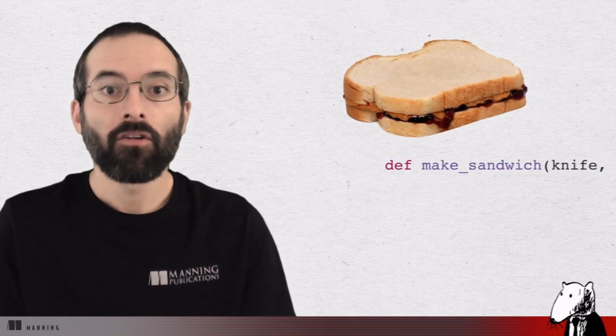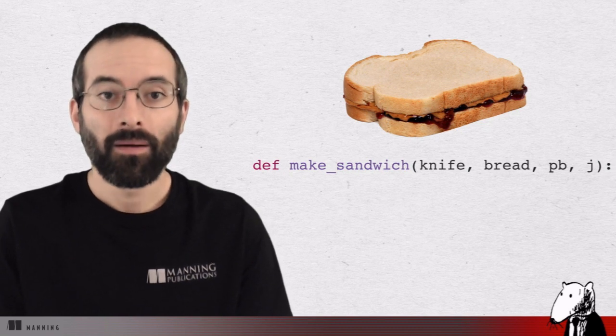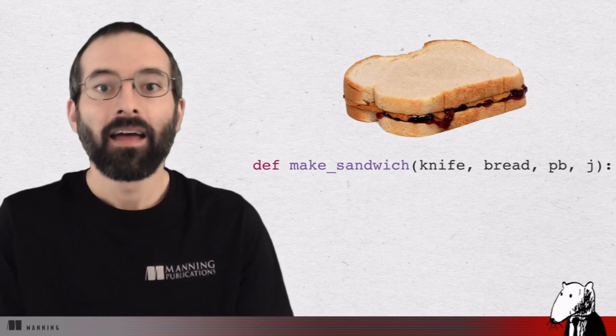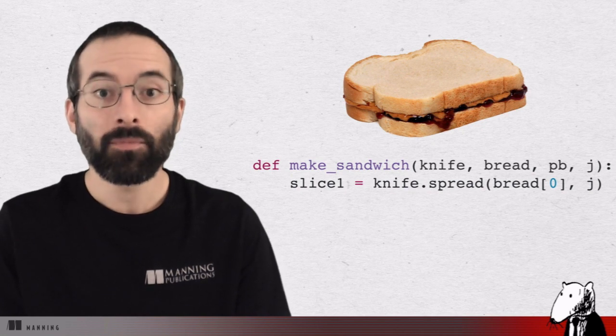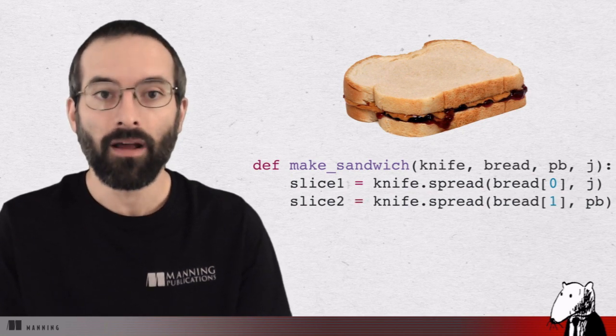How do you make a peanut butter and jelly sandwich? Well, first you get out a knife and the ingredients. Two slices of bread, peanut butter and jelly. Then you use the knife to spread jelly on one slice of bread and peanut butter on the other slice of bread.